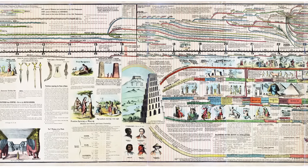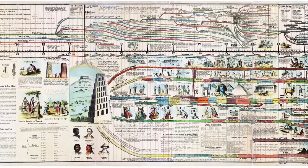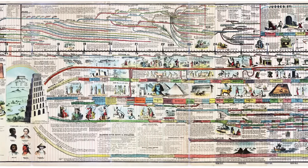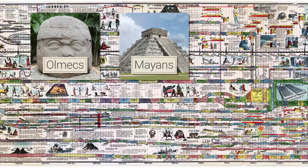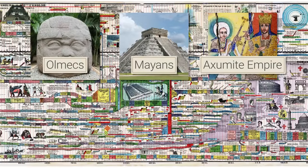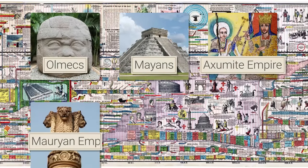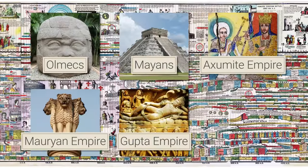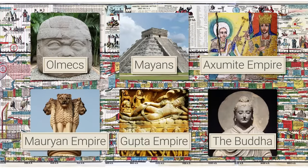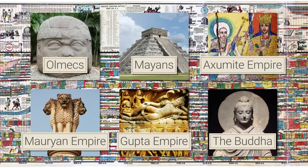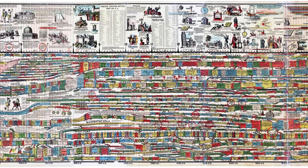And it's not just at the beginning. As we move on, there are so many major things missing. There is no mention of the Olmecs or the Mayans in Mesoamerica, no mention of the Aksumite Empire in Ethiopia, no Mauryan Empire or Gupta Empire in India. The Buddha doesn't even show up. In fact, India as a whole doesn't show up until around the year 1500 when Babur founds the Mughal Empire, which by this point on the timeline is no longer about a lack of knowledge.